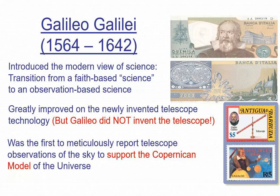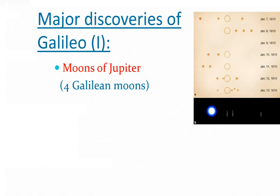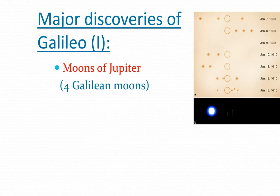Things Galileo saw: he saw four moons of Jupiter — we call them the Galilean moons. He offered to name them after the four sons of the Medici family if they would sponsor his research; they declined, so they ended up with names: Io, Europa, Ganymede, Callisto. He observed them changing position dramatically from one night to the next. This was significant because geocentric models said everything orbits the Earth — not just the planets, but everything. Yet here were things clearly orbiting Jupiter.